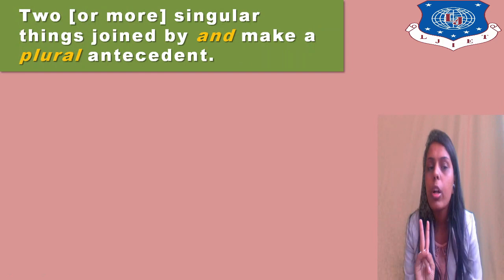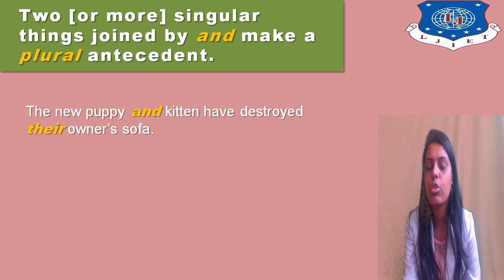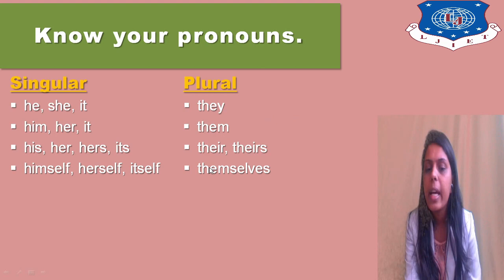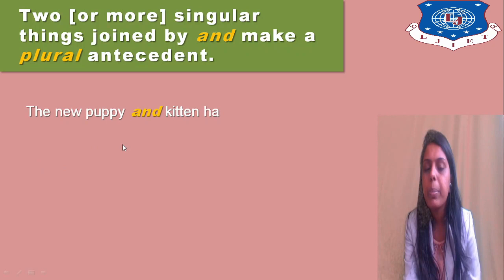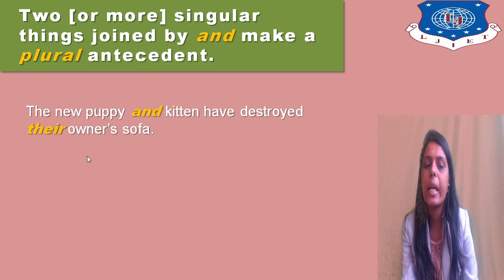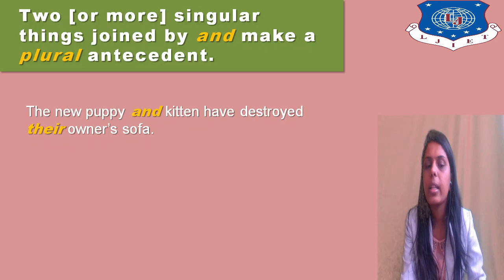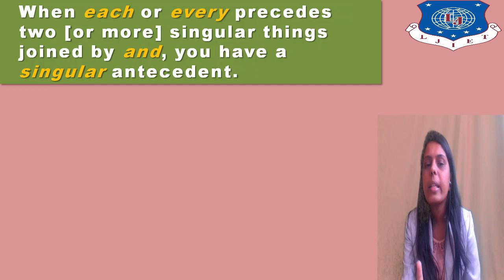Plural pronouns are they, them, their, theirs, themselves. Two or more singular things when joined by 'and' make a plural antecedent. For example: 'The new puppy and kitten have destroyed their owner's sofa.' There was a plural pronoun used because two antecedents are joined. Remember: when two nouns or two subjects are joined with the conjunction 'and,' the pronoun will be plural.